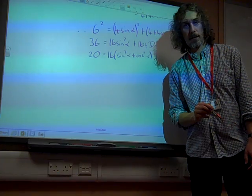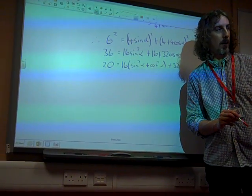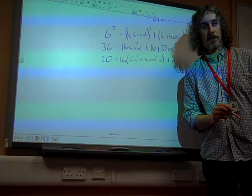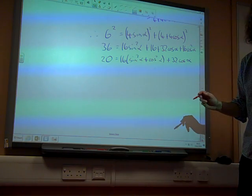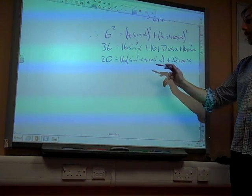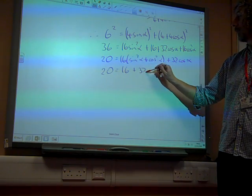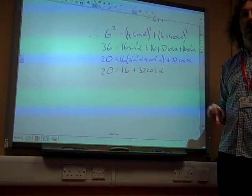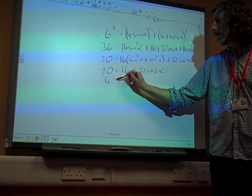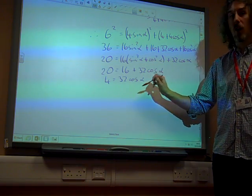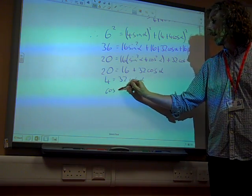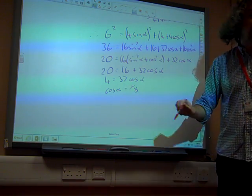Is that now lined up again? Apologies to all those who are now feeling quite seasick. So, we've got 20 is 16 plus 32 cos alpha. So, 4 is 32 cos alpha. So, cos alpha is equal to 1 eighth.